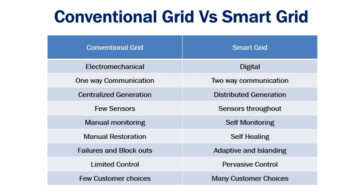When we compare the smart grid with the conventional grid: smart grid is digital whereas the conventional grid is electromechanical. In conventional grid, there is only one-way communication, whereas in smart grid there is two-way communication. Conventional grid has centralized generation, whereas smart grid has distributed generation.